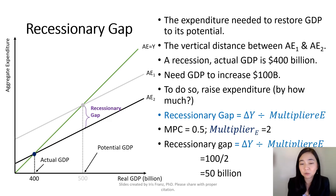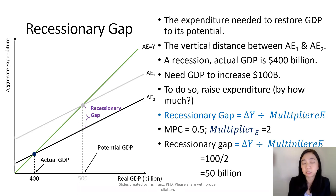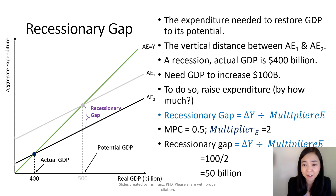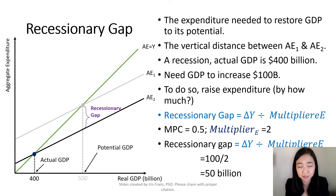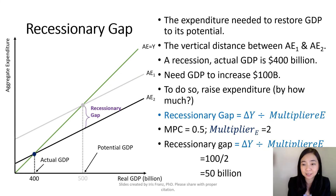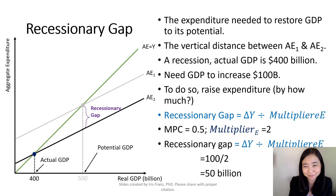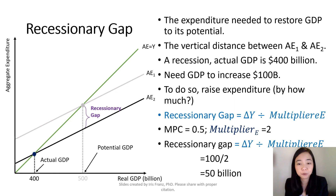We can calculate the recessionary gap by taking the desired change in GDP divided by our expenditure multiplier. In our example, our MPC is equal to 0.5, and therefore our expenditure multiplier is equal to 1 over (1 minus 0.5), which gives you 2. We want our GDP to increase by $100 billion, so $100 billion divided by the expenditure multiplier of 2 gives you $50 billion. So in this example, our recessionary gap is equal to $50 billion.